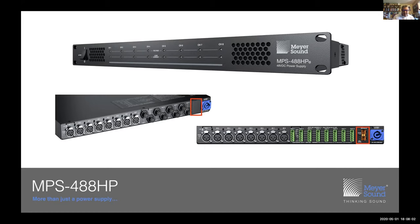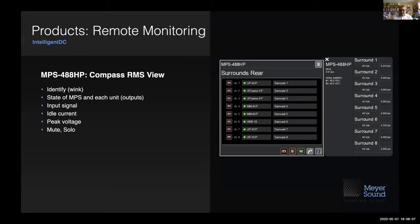From Compass — the same interface we use for monitoring Galaxy and Galileo processors — you have an RMS tab and can monitor every self-powered loudspeaker including the MPS 488 HP power supplies. You have the same kind of control on the eight outputs: the ability to wink a loudspeaker, check the state of each output, see the quiescent current going through the supply, and get a VU-like activity of what the supply is demanding in terms of voltage. You see peak and idle current, and you can also mute every output on the 488 or solo up the supply.